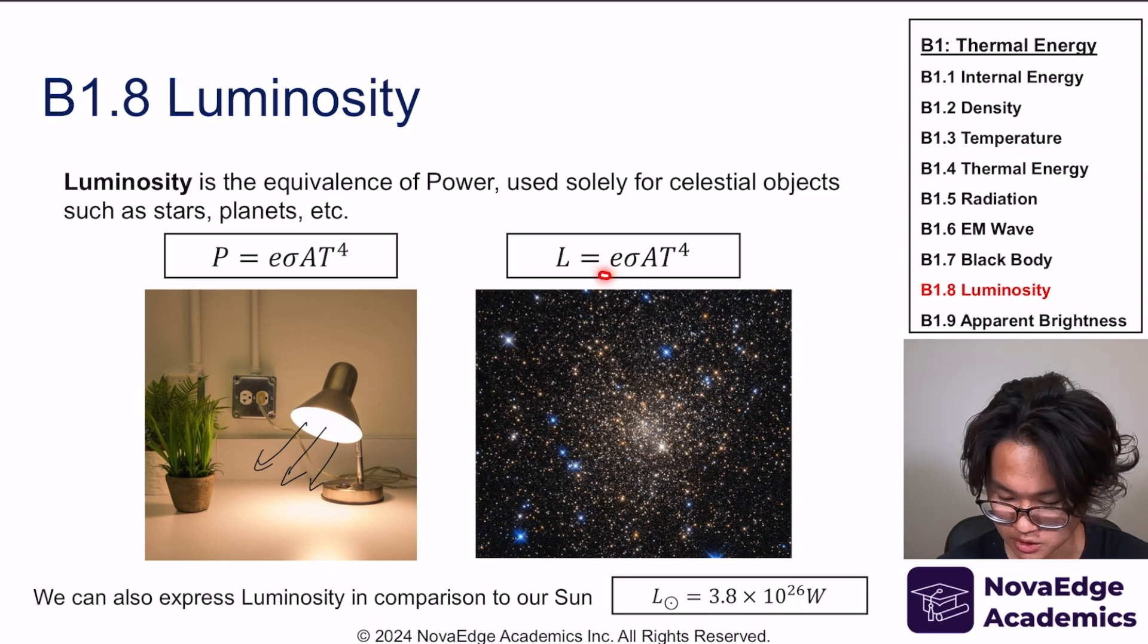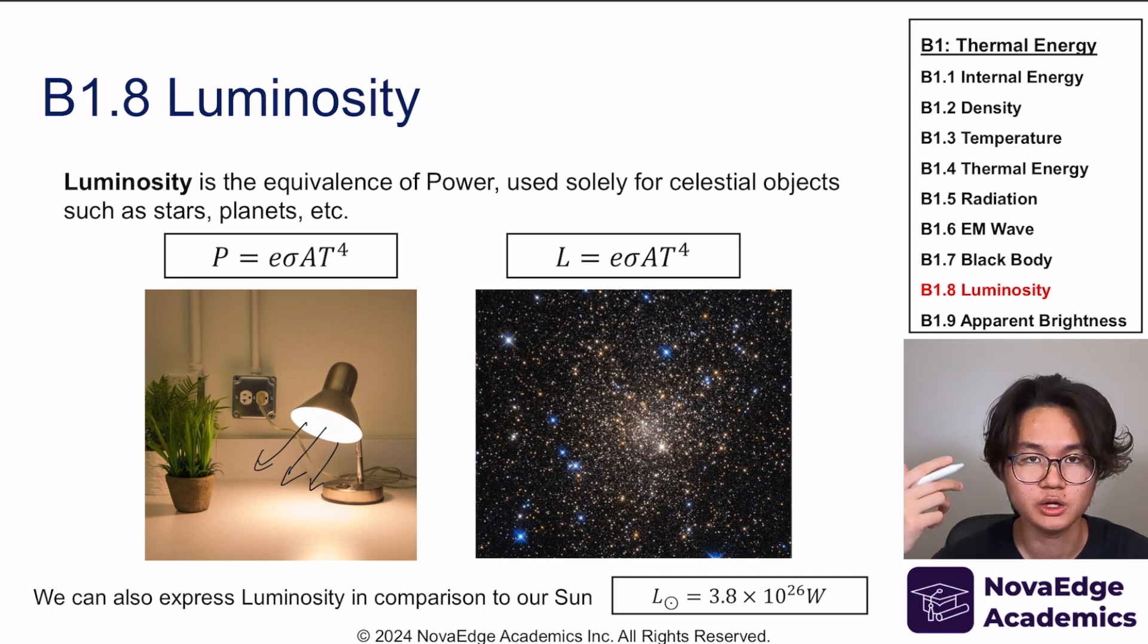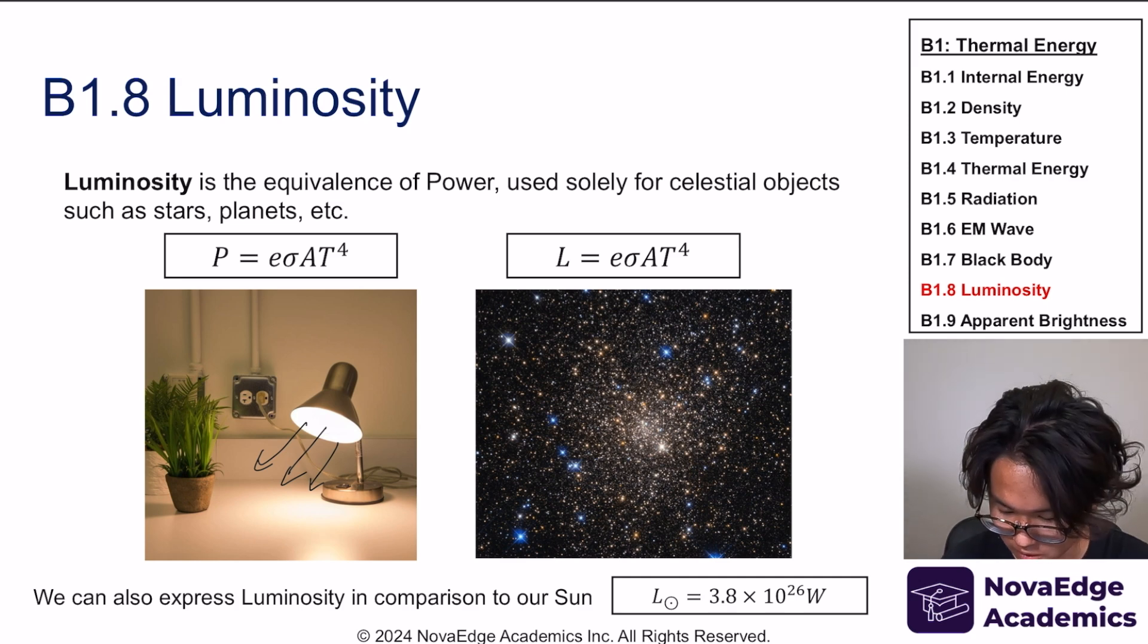Like stars and planets, because those emit a lot of power. We call that luminosity rather than power. We can also express luminosity in comparison to our sun. Our sun gives off 3.8 times 10 to the 26 watts. If you put in the temperature, surface area, and emissivity of the sun, you can calculate the power of the sun. So we can express it in terms of that. For example, if Earth emits one-tenth of the sun's luminosity, the luminosity of Earth is one-tenth of this value. It's just easier—we don't need to write out the whole thing.